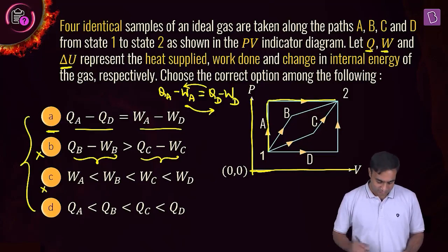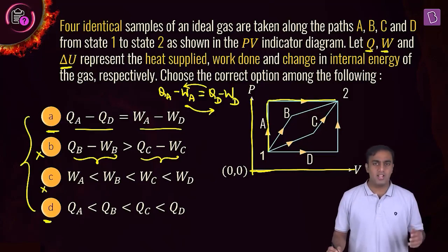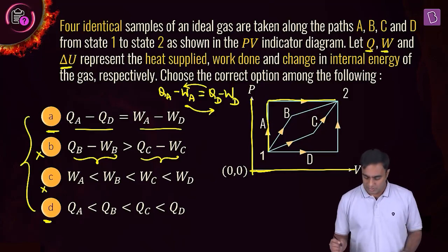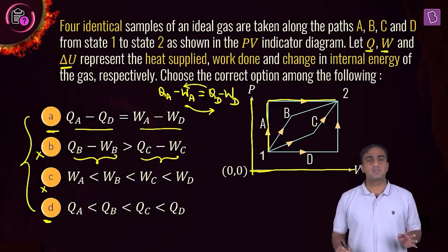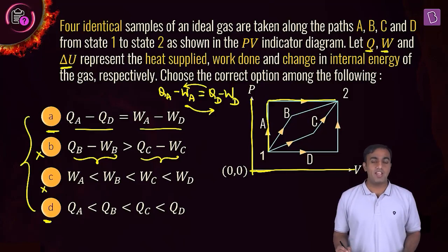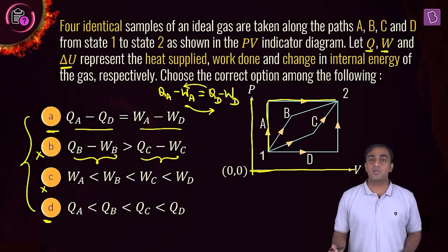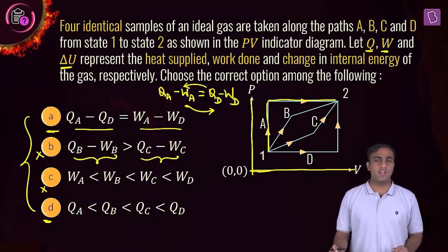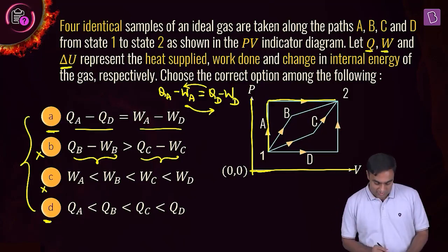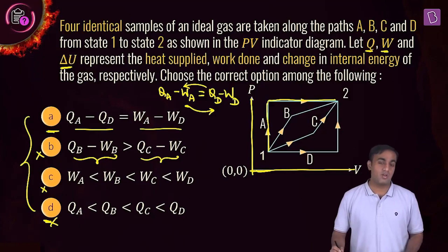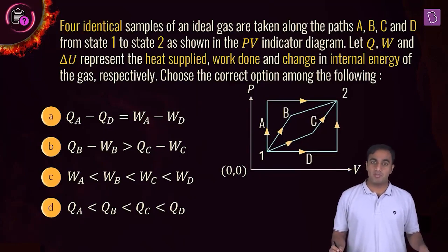For option D, we compare net heat supplied. Since ΔU is the same for all processes but work done differs, the net heat Q differs accordingly and is highest for process A — not equal across all processes. So option D is also wrong. The correct option for this question is A.